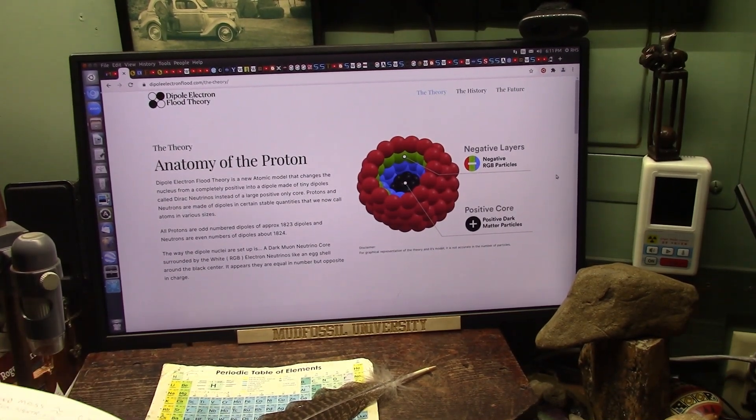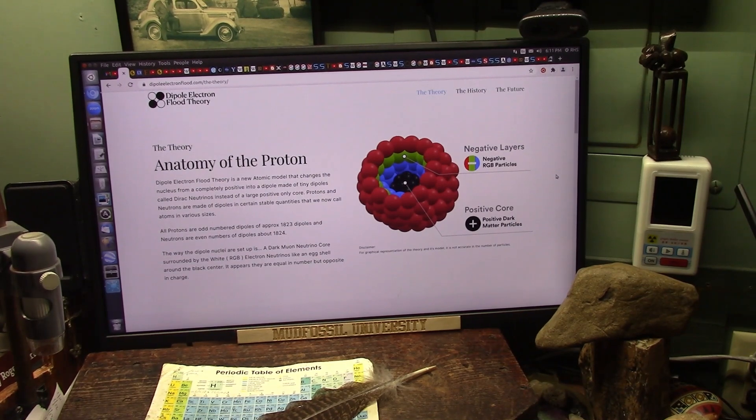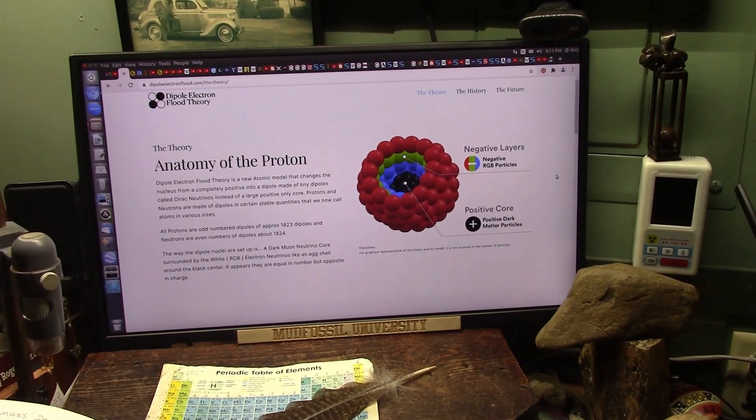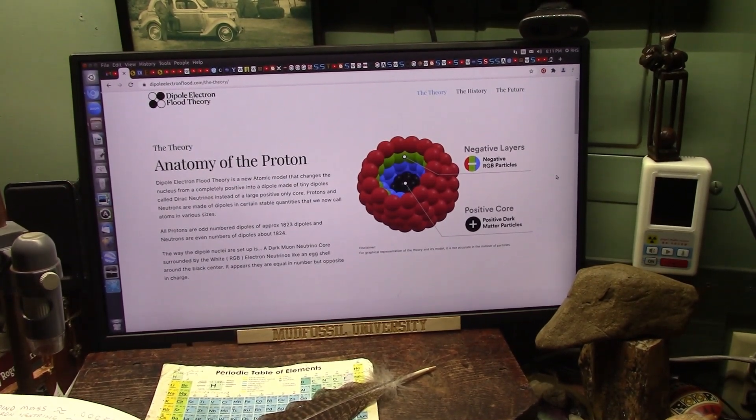Now we're going to be going into the Crookes radiometer. How does that work? Nobody's been able to explain that 150 years. It's a toy. Cannot be explained. And I think I have an explanation for it but I also am not certain.